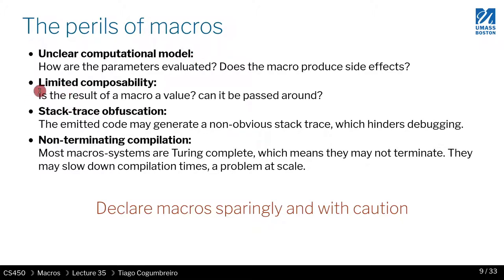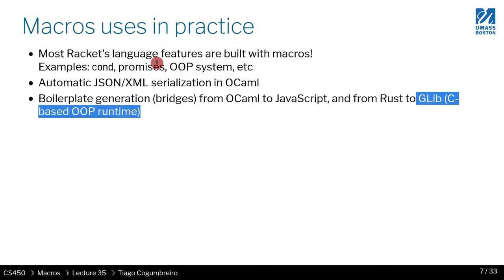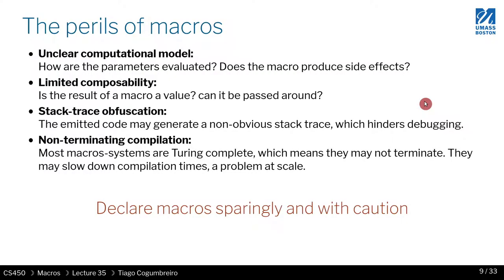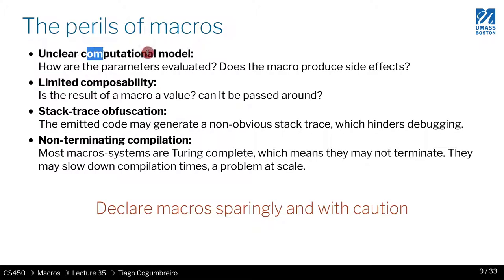Macros also have limited composability because of the unclear computation model. If you're trying to compose different computational models, it might be impossible, and macros don't help you there. You might create a macro to integrate two systems — for instance, going from Rust to glib — but composability is not transparent, because it's impossible to know what the computation model is just from looking at a macro call.